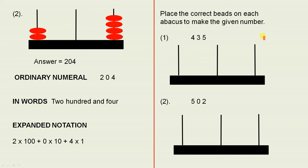Here we have to place the correct beads on each abacus to make the given number. So 435. That's the hundreds column, the tens column, and the ones column. Just place the correct beads to make that number. And the same here, 502. Place the correct beads to make that number.